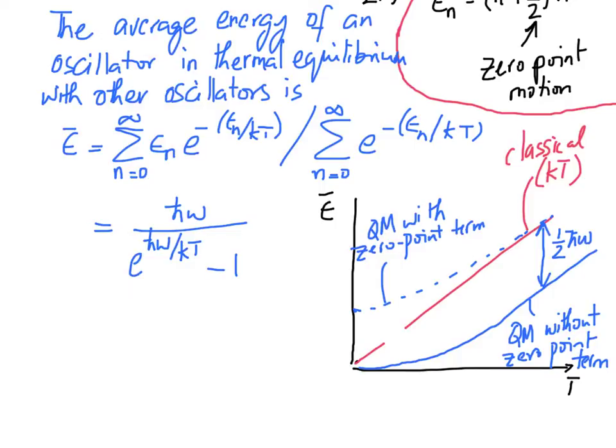So here is the plot. The red line is the classical result where epsilon bar equals kT, so it's linear with respect to T going through zero. The solid blue curve is the quantum mechanical result, Einstein's result without the zero point term, and the dashed blue curve is the one when you include the zero point term. You can see there is a difference of one half h-bar omega, and the quantum mechanical curve with the zero point term approaches the classical result at high temperatures.